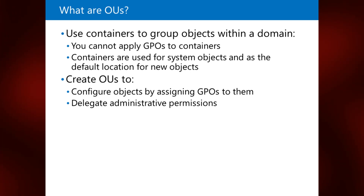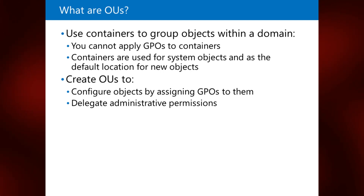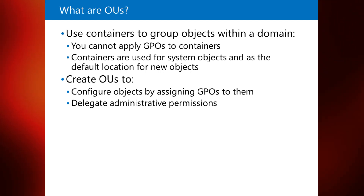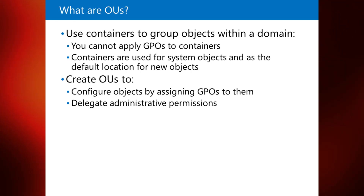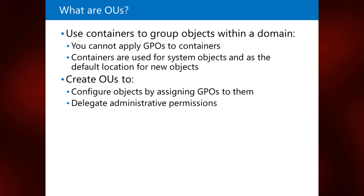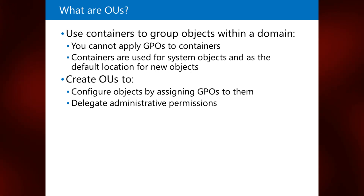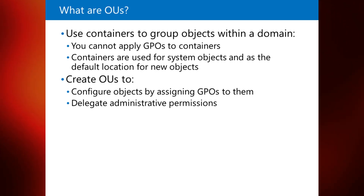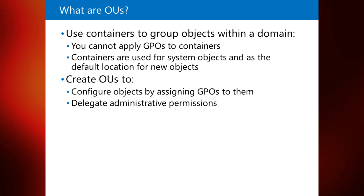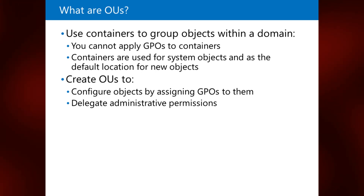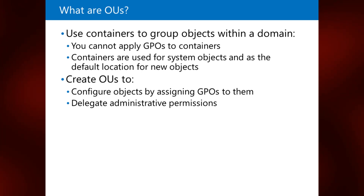There are several containers you can see only when you click Advanced Features on the View menu. The following objects are hidden by default: Lost and Found — holds orphaned objects. Program Data — holds Active Directory data for Microsoft applications such as Active Directory Federation Services (ADFS). System — holds the built-in system settings. NTDS Quotas — holds directory service quota data. TPM Devices — new with Windows Server, stores recovery information for Trusted Platform Module (TPM) devices.